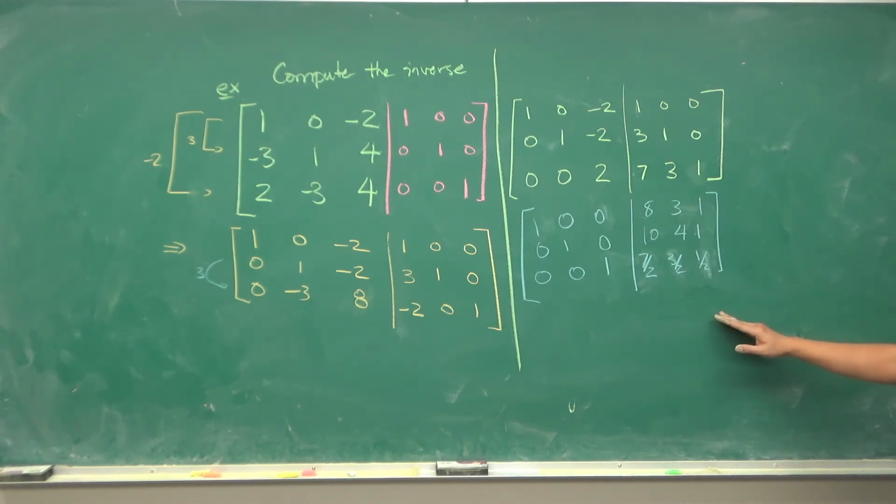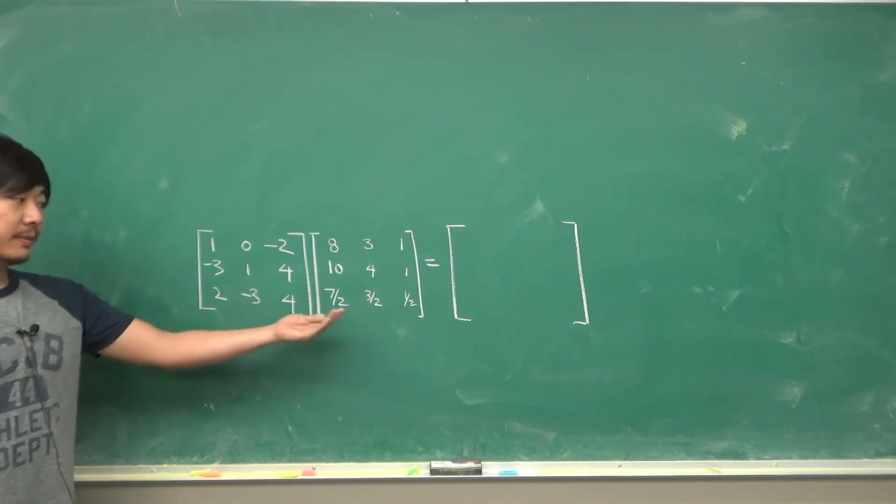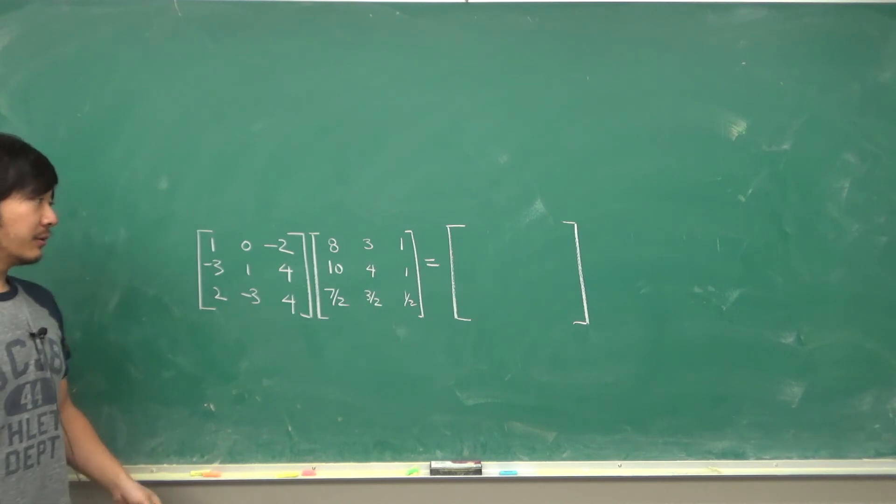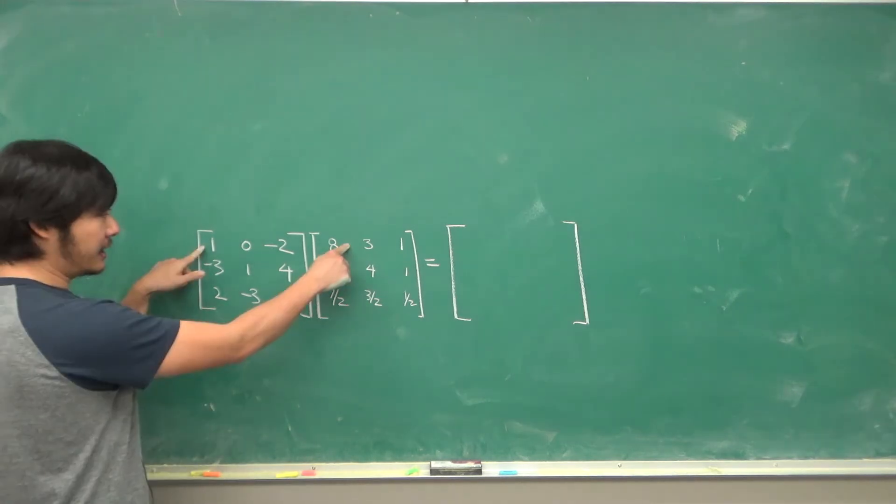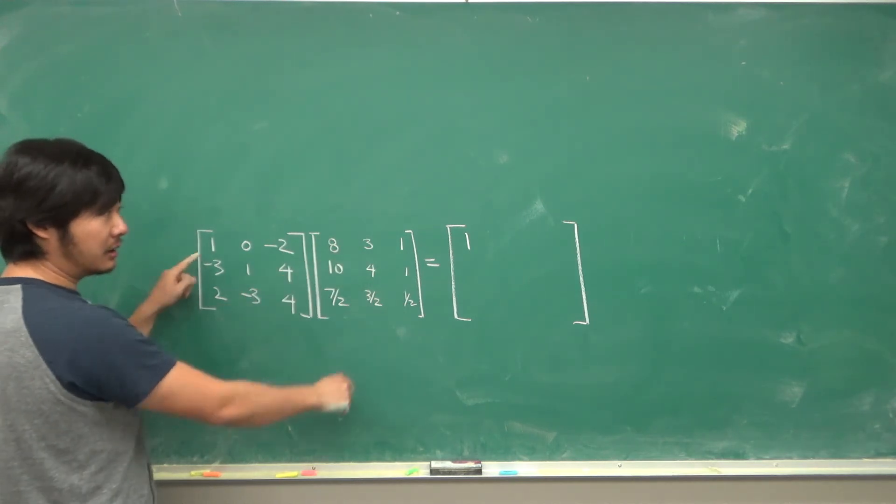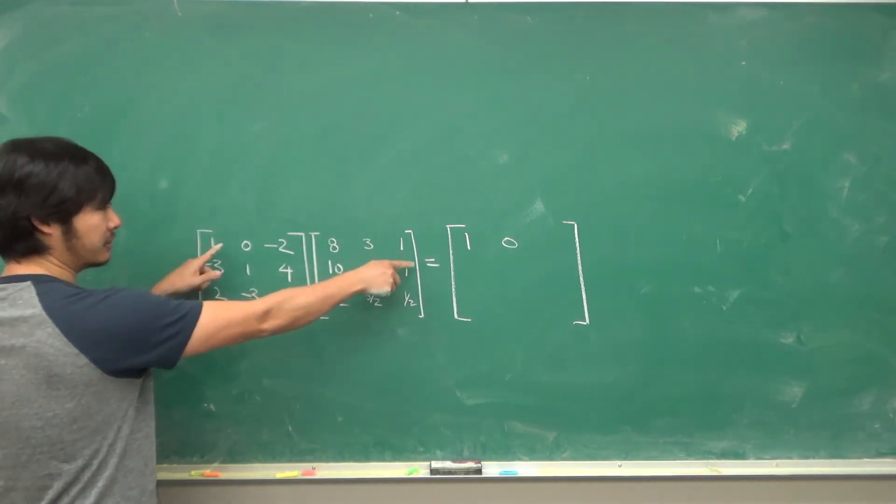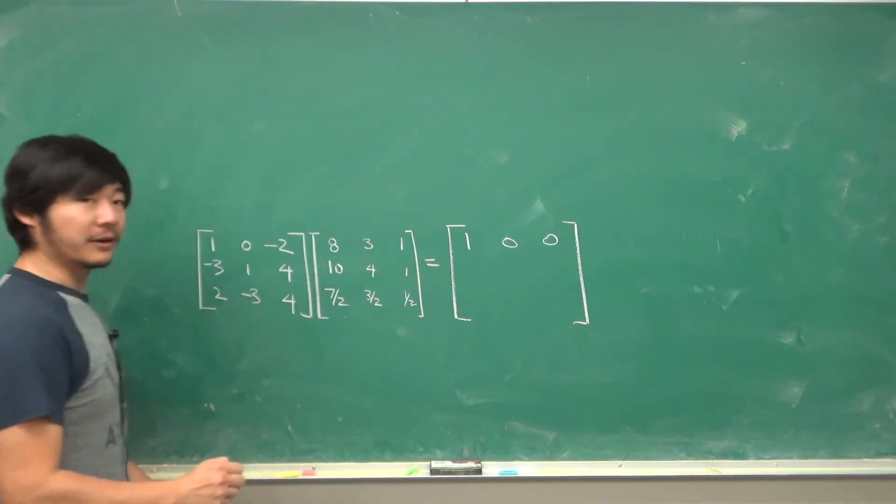Now we can always double check if we did it correctly so let's do that. We want to multiply the original matrix by the inverse, so row times column: it will be 8 plus 0 minus 7 is 1. First row times second column: 3 plus 0 minus 3 is 0, and 1 0 minus 1 is 0. So far so good.